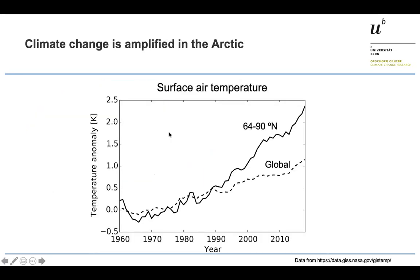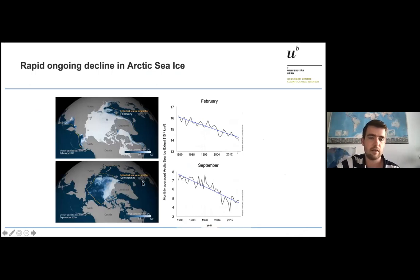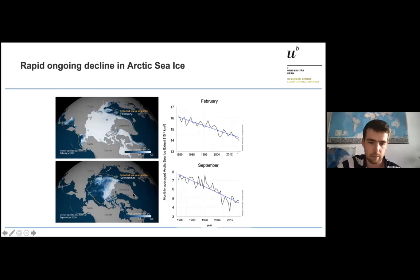With climate change, the Arctic itself is heating much faster than the global Earth. We can see this in the temperature time series — climate change is amplified in the Arctic. This leads to strong reductions in sea ice cover. The maximum extent in February is reducing over time, and the summer minimum extent is also reducing strongly, as visible on the map. Large parts of the Arctic are now ice free, which brings us directly to ocean biogeochemistry.